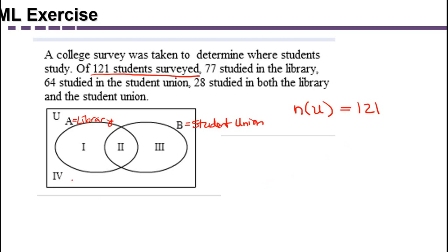Now a lot of times students start to write 121 in this part of the diagram because that looks like that's where U is. But remember U is referring to all the regions, all four of them. And if I write 121 there, that looks like it's just in region four, and that would be incorrect.